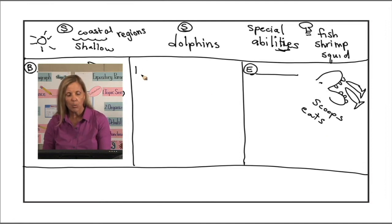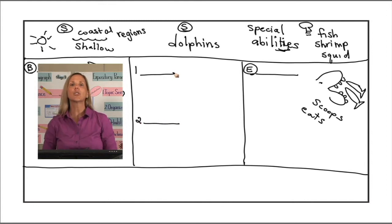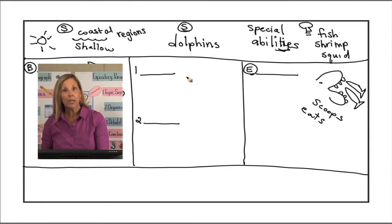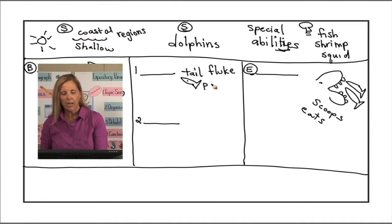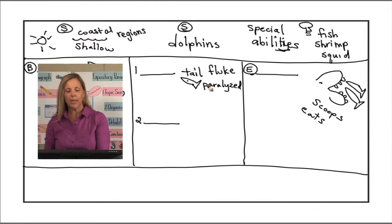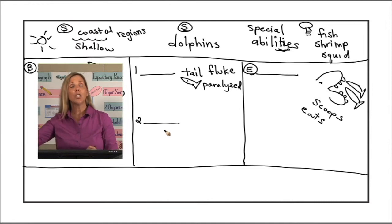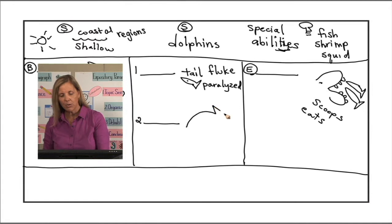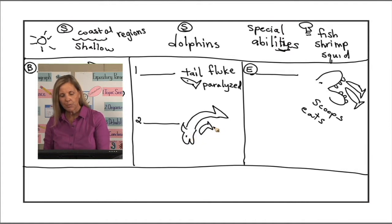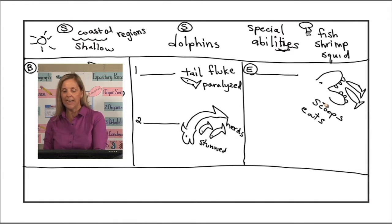Do we need a transition for the ending detail? We could use 'finally' or 'in the end.' Since this is the end of their process: 'In the end, the dolphin scoops up these ocean animals with its evenly spaced teeth for a tasty meal.' Let's go back and say all the sentences before the conclusion, rehearsing and revising constantly. Every day, out in the coastal regions, dolphins use their special abilities to catch fish, shrimp, and squid. First, the dolphins use sonar or echolocation to find their food in the vast ocean. Then these sea mammals slap their powerful tail flukes on their prey to paralyze them. Next, they herd the stunned sea creatures into a large group. In the end, the dolphins use their evenly spaced teeth to scoop up the ocean animals.